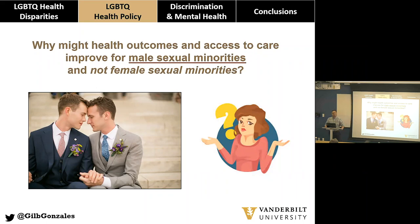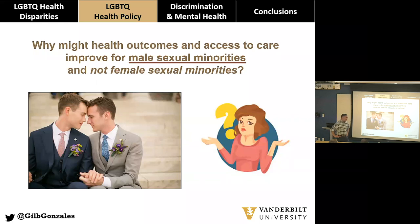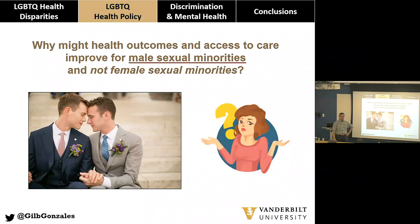There's evidence from European countries that implemented same-sex marriage in a staggered way showing acceptance in the general population improved significantly after a country introduced same-sex marriage — that's Kit Carpenter's paper showing laws and policies influencing attitudes. The link from attitudes in the general population to mental health among male sexual minorities seems quite direct. We just need more data as more countries address same-sex marriage.